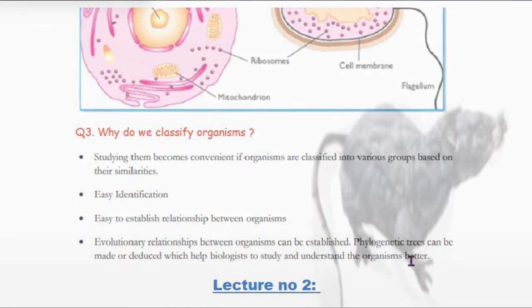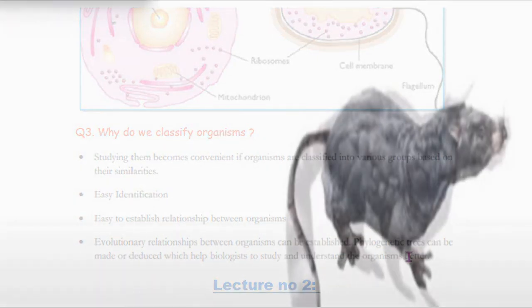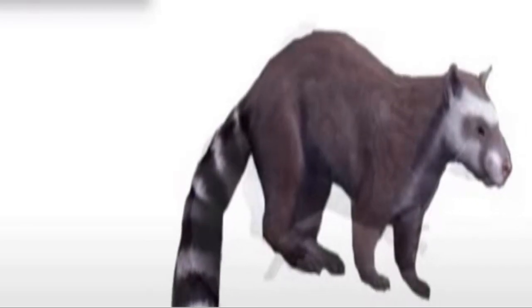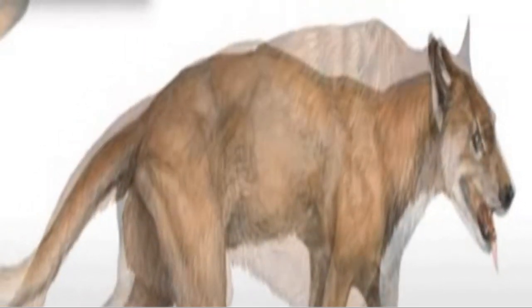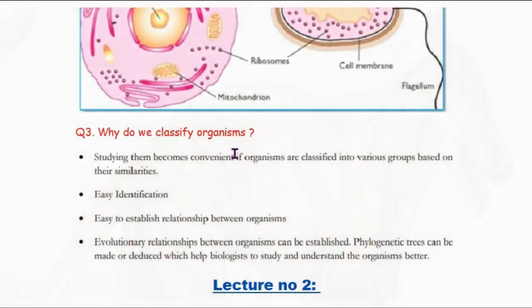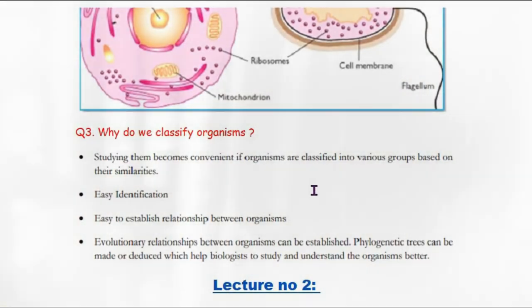Classification also makes it easier to identify evolutionary relationships. If two microbes share genes, we can identify whether they have an evolutionary relationship or share the same phylogenetic tree. These are the main reasons why we classify organisms.